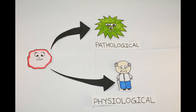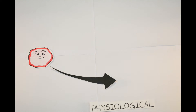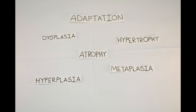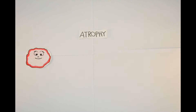So how does adaptation occur? There are five patterns of adaptation that differ according to the type of stimuli: atrophy, hypertrophy, hyperplasia, metaplasia, and dysplasia. Let's start with atrophy.